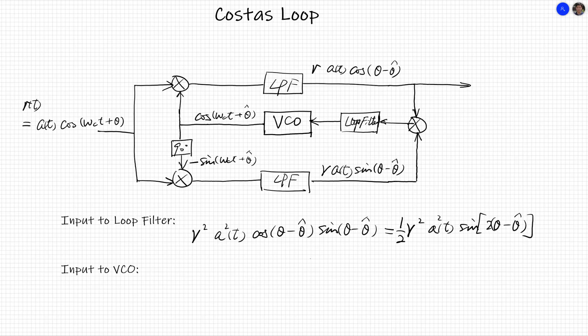A squared is the power of message bearing signal. Over a period of time averaged, it will become stable for some modulation methods. For example, BPSK, A squared is a constant. So the input of VCO is proportional to sine 2 times theta minus theta hat. When the difference between theta hat, the estimated phase, and theta, the original phase, becomes smaller and smaller, sine can approximately equal theta minus theta hat times 2. This works very well as the input to the VCO.